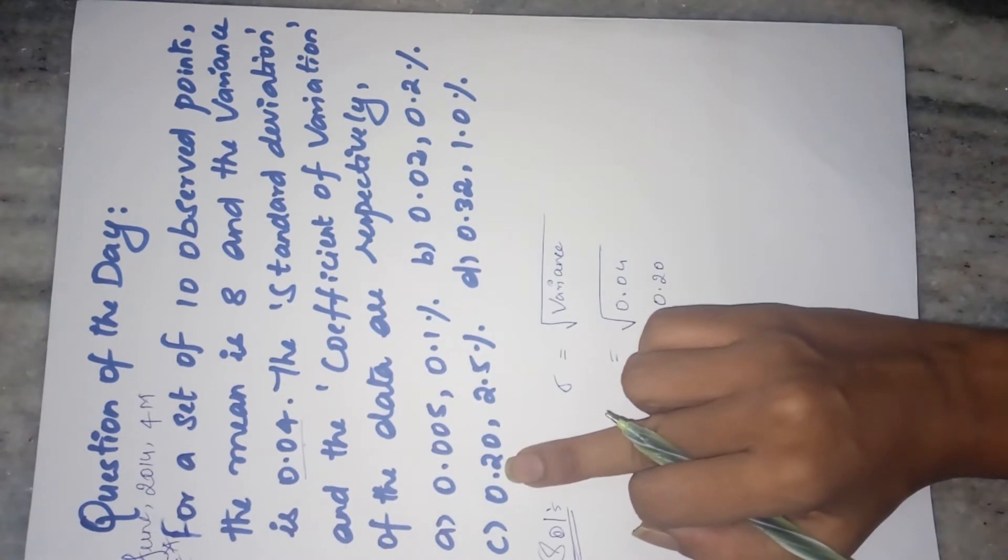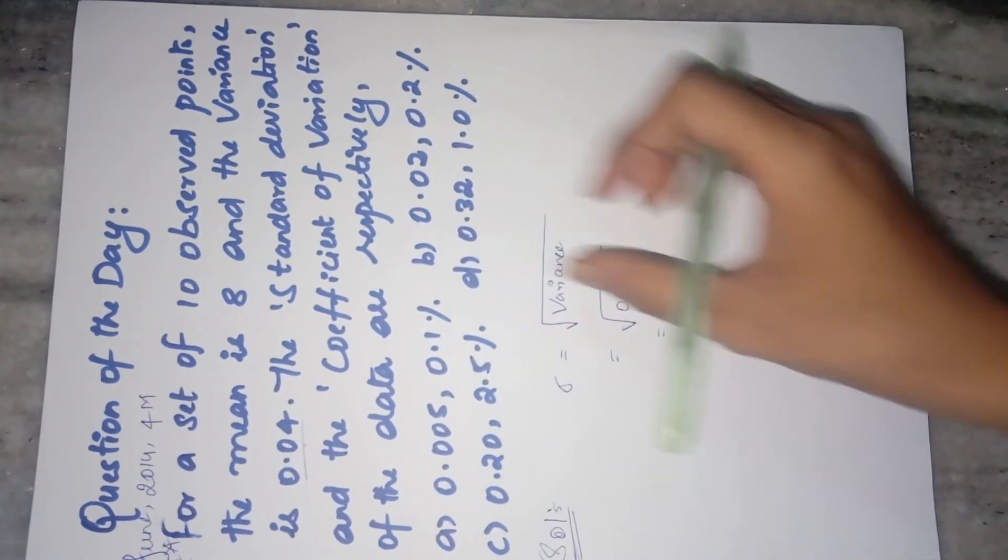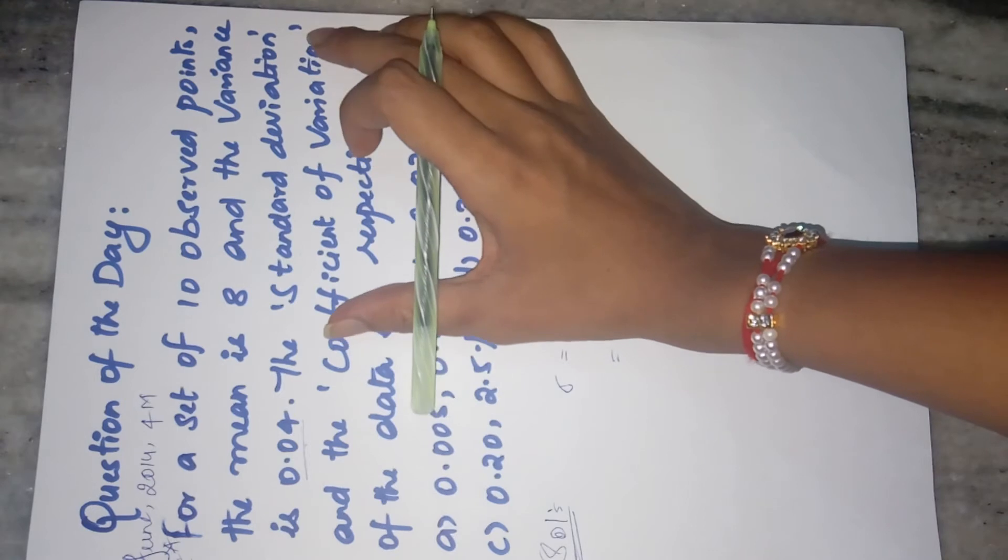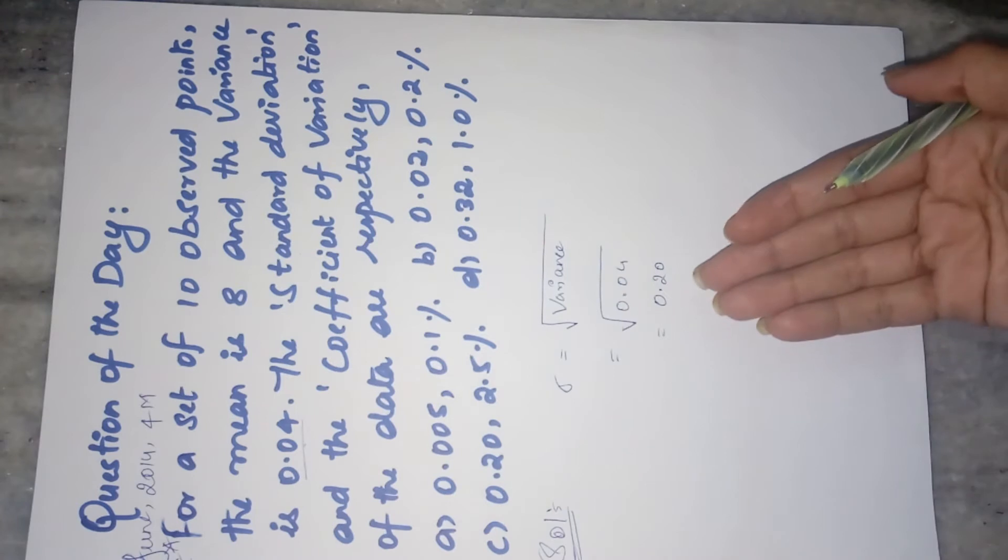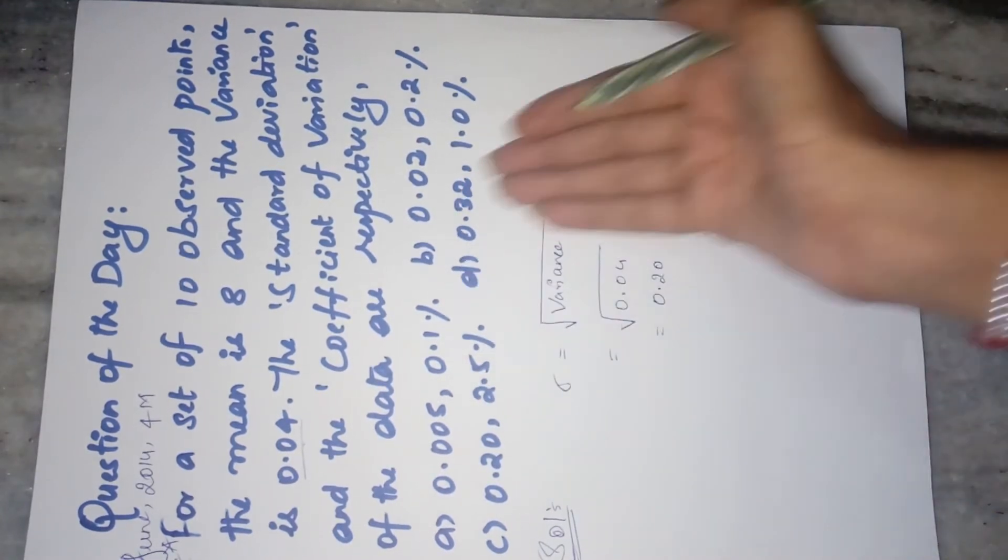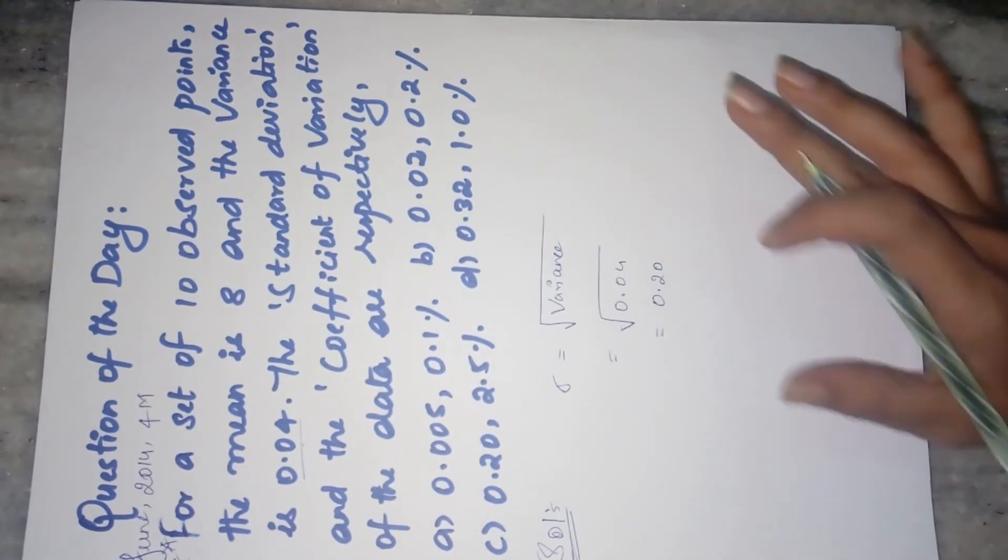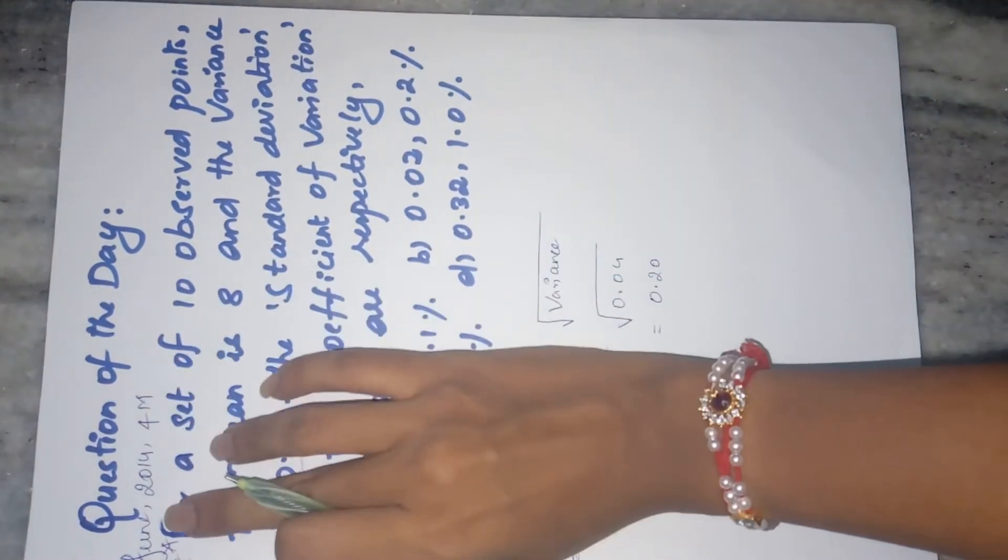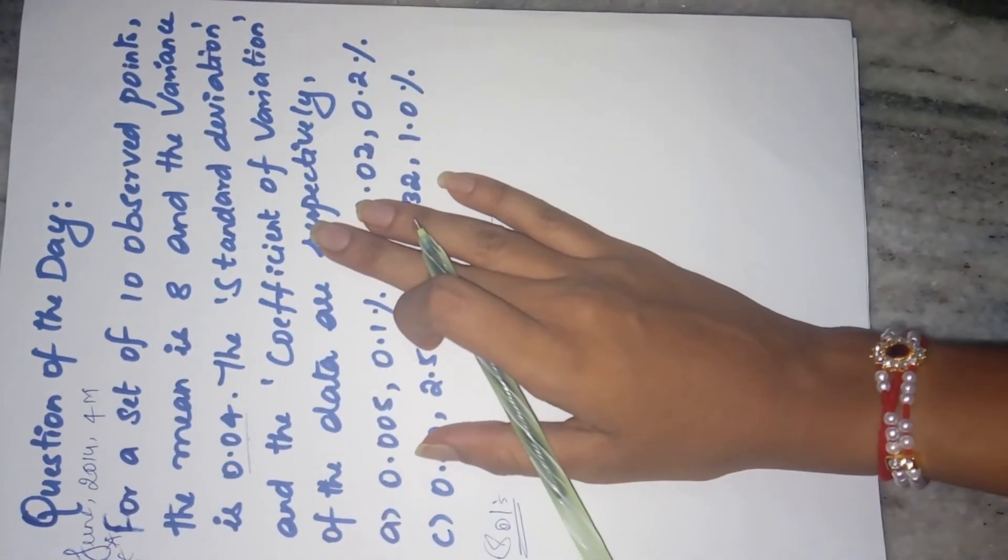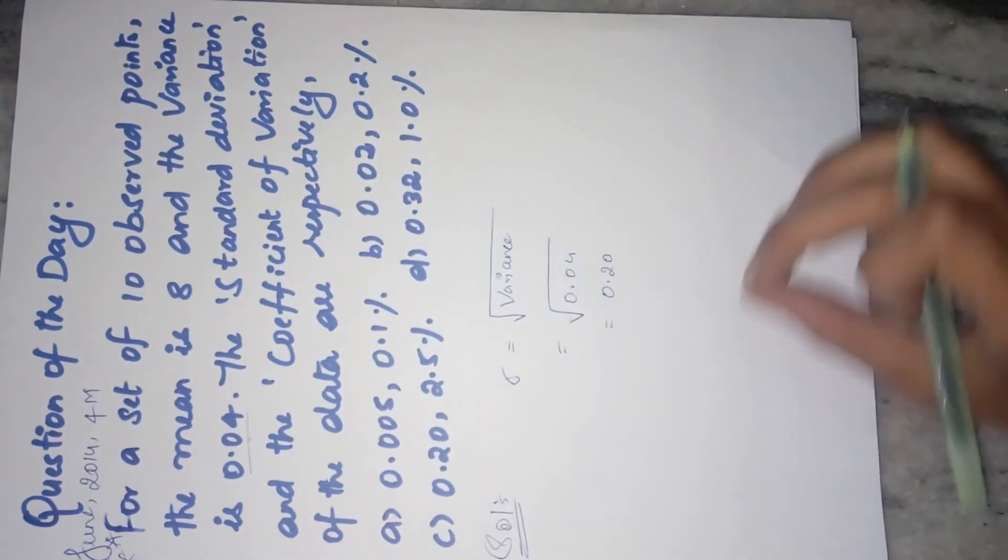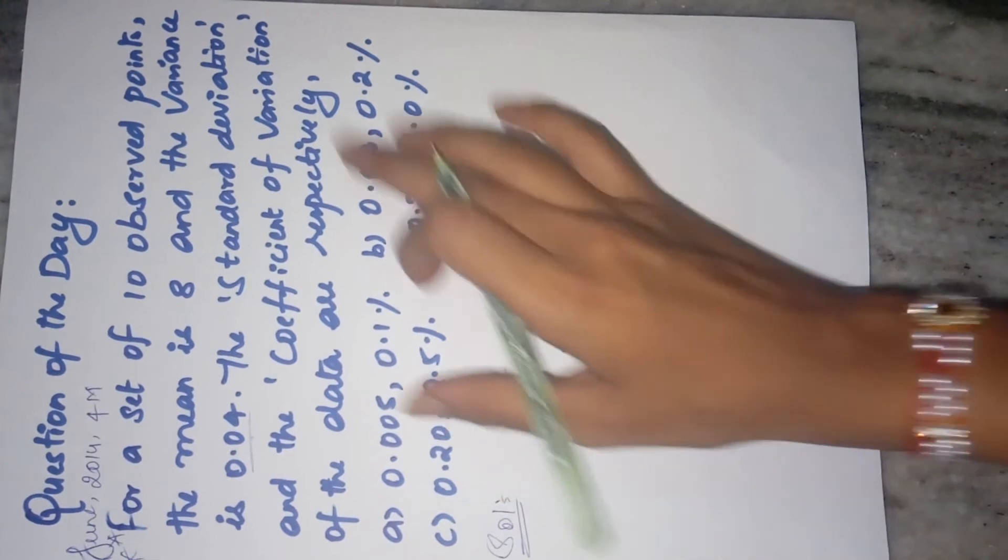If you look at the options, 0.20 is present only here. They did not even confuse you by giving this in any other option. So even if you do not know the next formula of coefficient of variation, if you have forgotten, you can directly mark C as the right option if you know that your standard deviation is nothing but the square root of variance. So this was a 4 marks question in your June 2014 CSIR. So I request you to please do not leave this kind of questions as they are very scoring, provided you just have to put a little effort. A half an hour or one hour preparation is more than enough for this kind of data handling chapters.